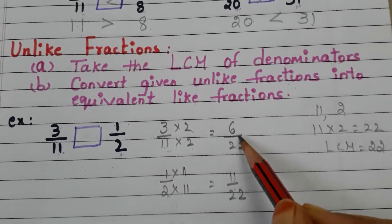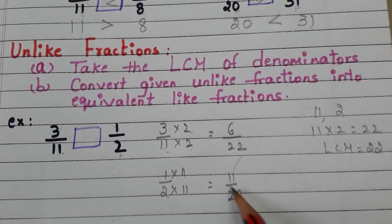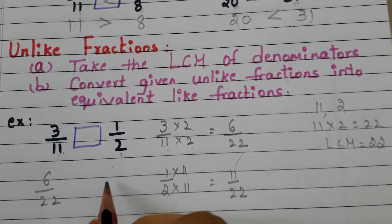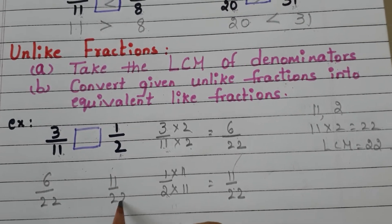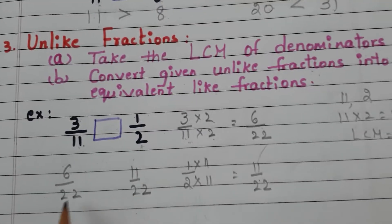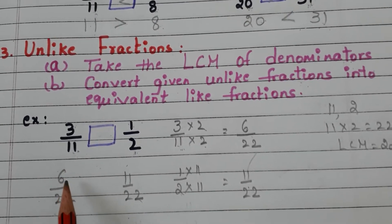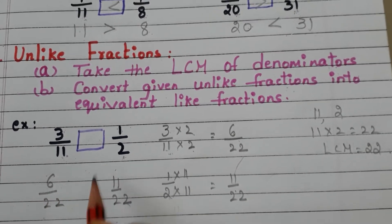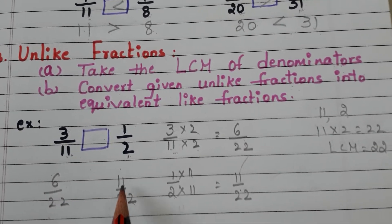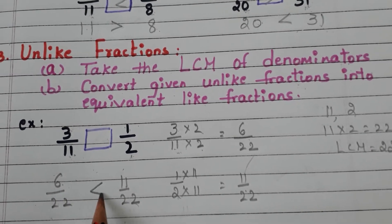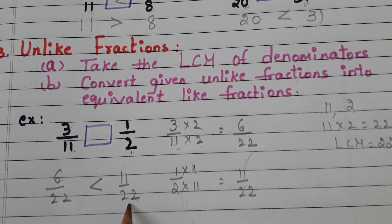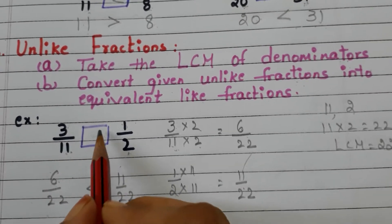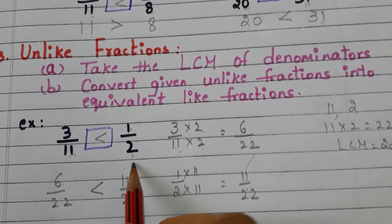Now we have the like fractions 6 by 22 and 11 by 22. Compare the numerators 6 and 11 — 6 is less than 11. So 6 by 22 is less than 11 by 22, which means 3 by 11 is less than 1 by 2.